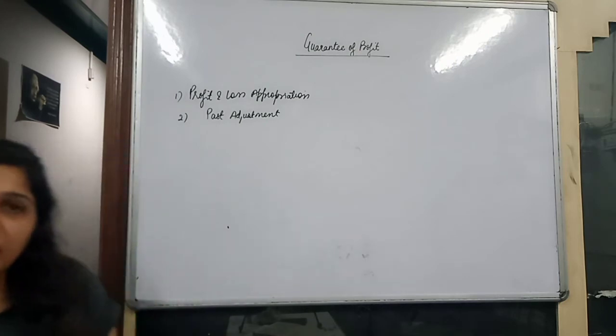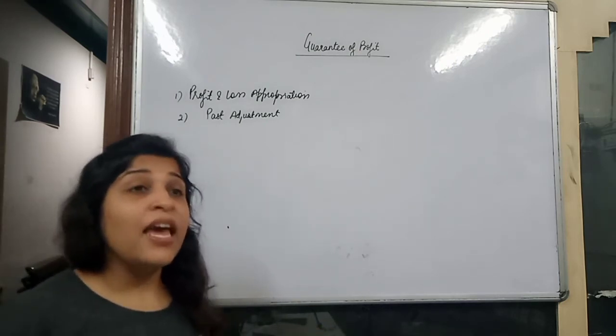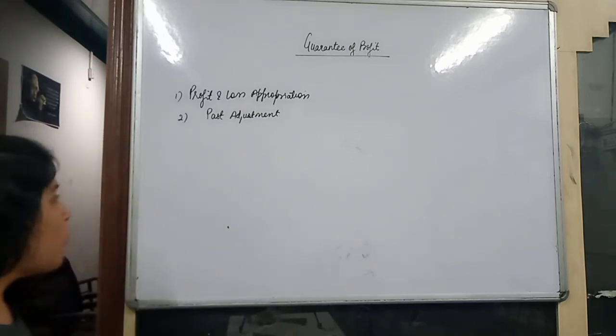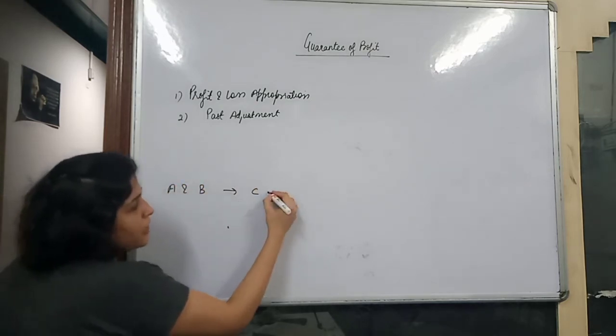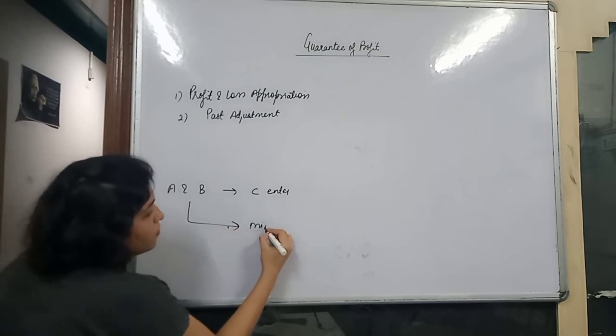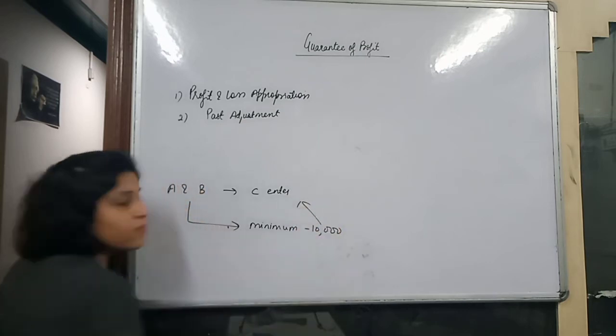Guarantee of Profit means if a new partner joins the existing partners, they guarantee a certain minimum amount. For example, if A and B are partners and C enters the business, A and B might guarantee that C will receive a minimum of 10,000 rupees as profit.